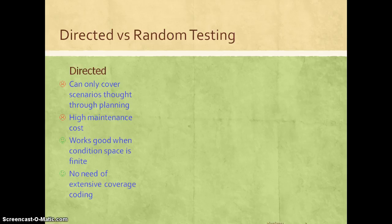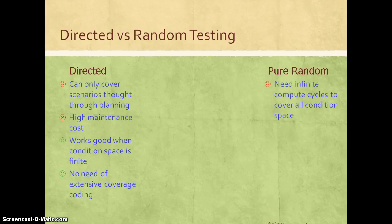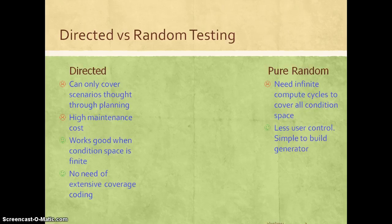One advantage of directed testing is that you don't need extensive coverage coding, since we know exactly what the test is covering — it's guaranteed to hit that scenario. On the other hand, pure random testing needs infinite compute cycles to cover all condition space. We depend on a random test generator to randomly hit all scenarios, running for an infinite number of seeds, and there is less user control since we depend entirely on the generator.